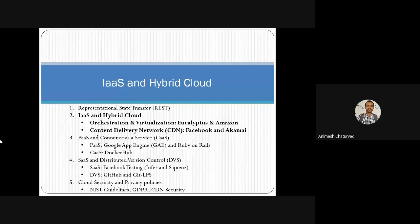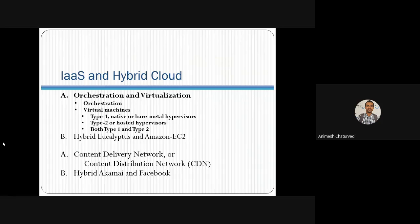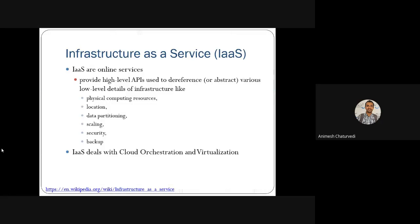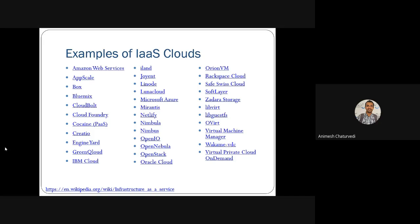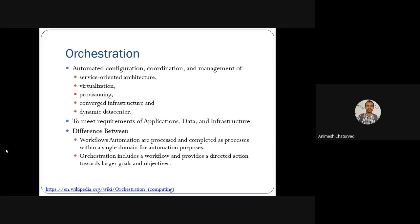We had also seen Hybrid Cloud. In IaaS hybrid cloud, we saw orchestration and virtualization, where we discussed Eucalyptus and Amazon, and the Content Delivery Network (CDN) for Facebook and Akamai. We also saw Type 1 and Type 2 hypervisors. IaaS deals with abstraction of physical resources, orchestration, and virtualization. Examples of IaaS cloud providers include Eucalyptus, OpenStack, Apache CloudStack, and OpenNebula.